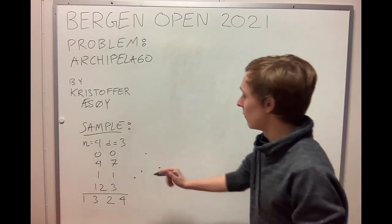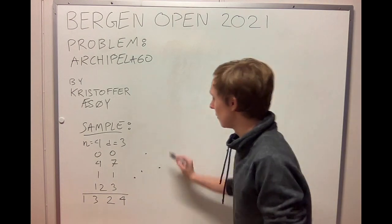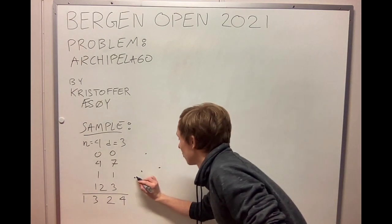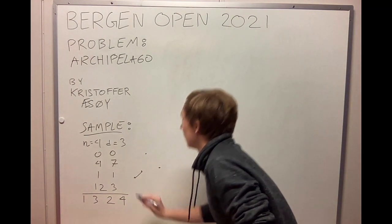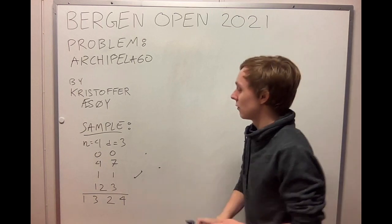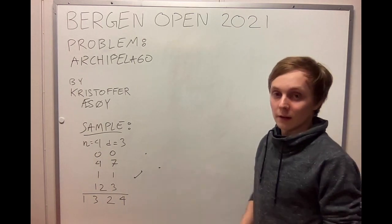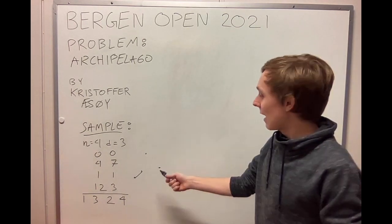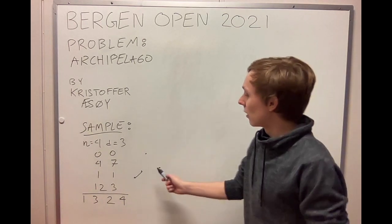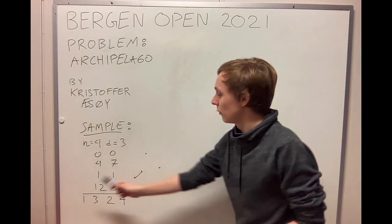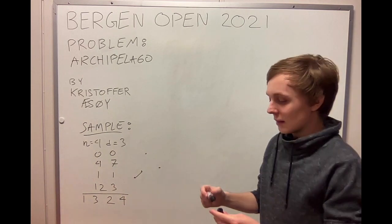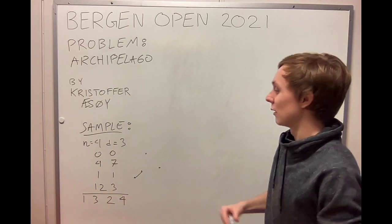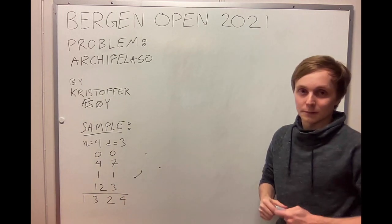If we visualize this we can see it will look something like this. We can actually make a ferry trip between the first and third island, so they are the most useful islands for placing an airport because they can reach the most amount of islands.